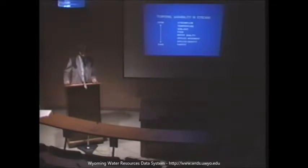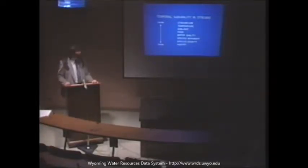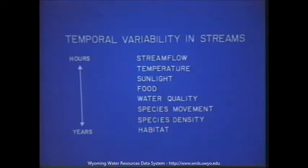Streams where fish live are highly variable systems, and there are two major sources of variability. One is temporal variability, which occurs on a scale ranging anywhere from hours to years and beyond. Things that change along this scale include stream flow, temperature, sunlight, food, water quality, species movement, species diversity, and habitat. Some of these are interrelated, and these are only a subset of many things that can vary.